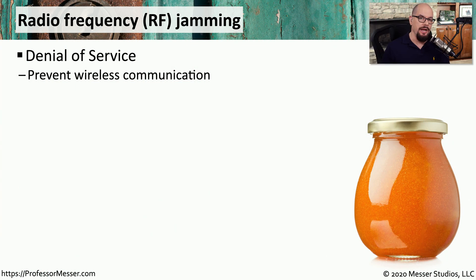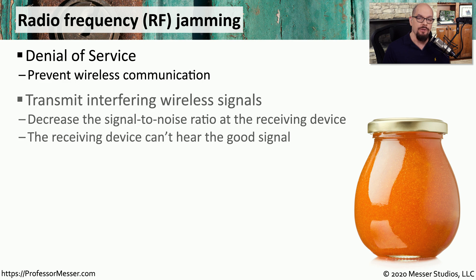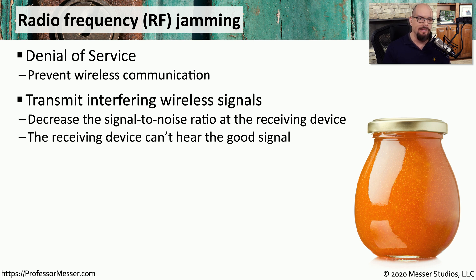Radio frequency jamming, or RF jamming, is a way for an attacker to disrupt a wireless network and effectively create a denial of service situation. The goal is to decrease the signal to noise ratio at that receiving device, whether that's the station or the access point.